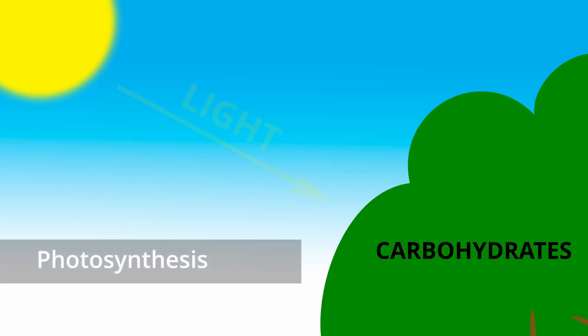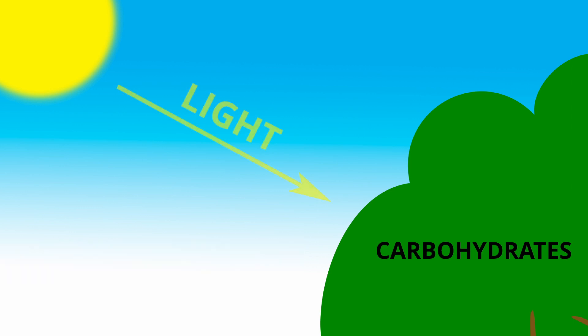Photosynthesis is the process by which trees capture energy from the sun and store it in carbohydrates. This energy source then drives the metabolism of the tree, growth, reproduction, and defense. The way that this energy is used is through the process of respiration, which releases energy from the carbohydrates.